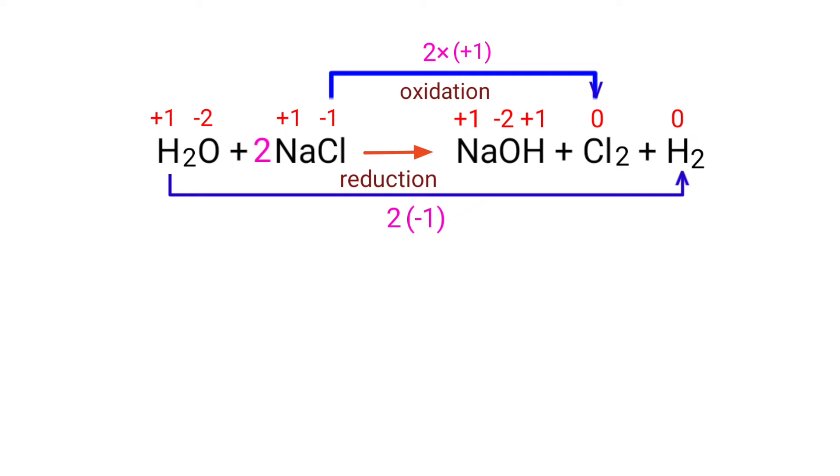Now you can write the equation as H2O plus 2NaCl gives us NaOH plus Cl2 plus H2.